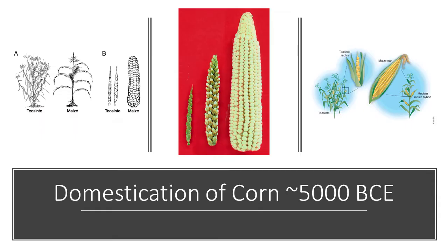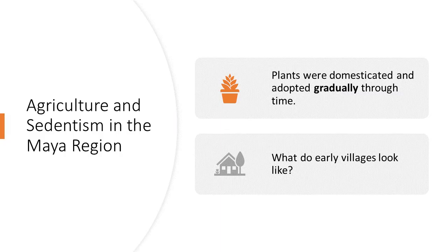There was corn or maize by about 5000 BCE, or possibly earlier. You can see an image showing what the wild ancestors of maize, called Teosinte, look like in comparison to a modern corncob. Much of this evidence comes from outside of the Maya area, but it illustrates that there was a gradual adoption of domesticated plants used gradually through time.